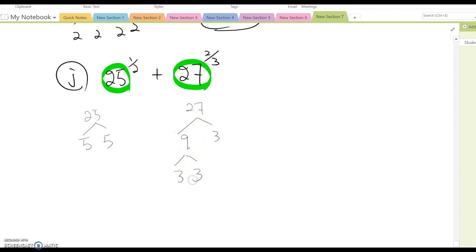So this is going to be 5 squared to the 1 over 2 power plus 3 cubed to the 2/3 power. Therefore, this becomes 5 plus 3 squared, which is 5 plus 9 equals 14. Okay.